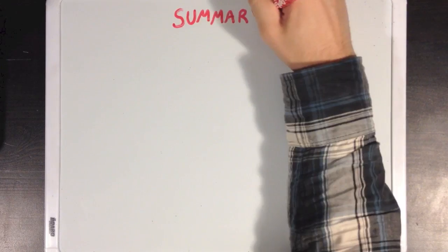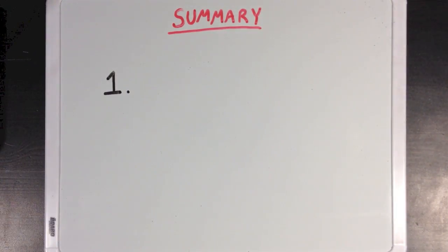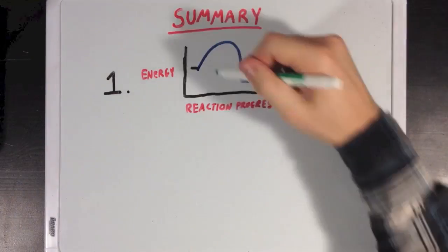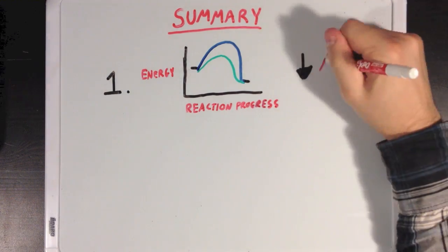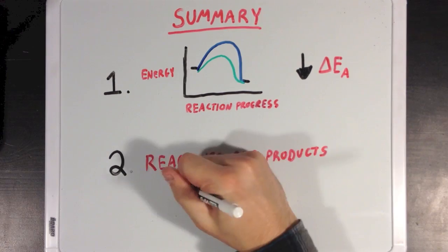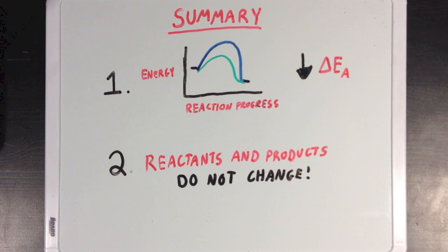So what did we learn? Well first we learn that enzymes work by lowering the activation energy of a reaction, making it much easier for reactants to react and form products more quickly. Second, we learn that despite the change in pathway to get from A to B, the reactants and products do not change when using an enzyme versus when not using an enzyme.